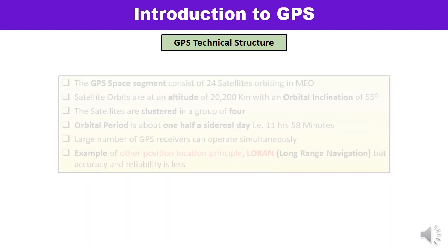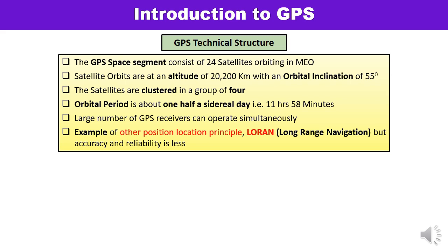Now for some technical structure of the global positioning system. The GPS space segment consists of 24 satellites orbiting in medium earth orbit, located at a height of 20,200 km. The orbital inclination is 55 degrees, and all 24 satellites are clustered in groups of four, meaning six satellites exist in a single group. The orbital period is about one half of the sidereal day — that is 11 hours and 58 minutes — and a large number of GPS receivers can operate simultaneously.